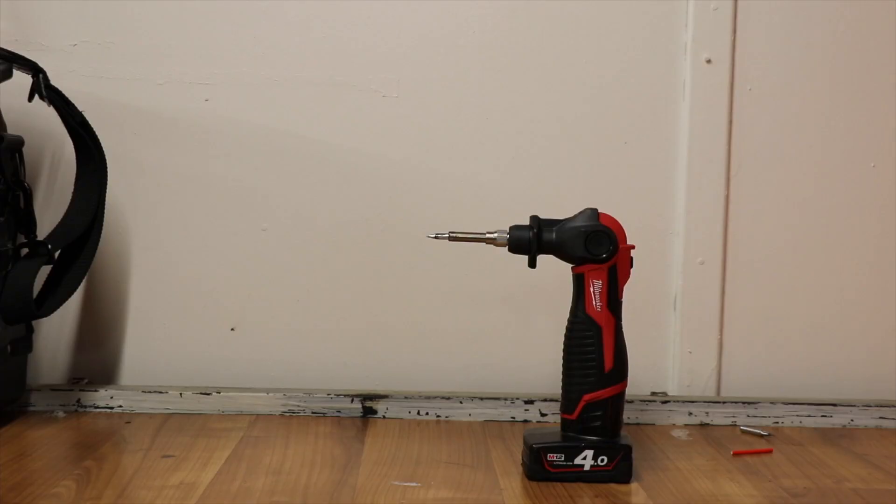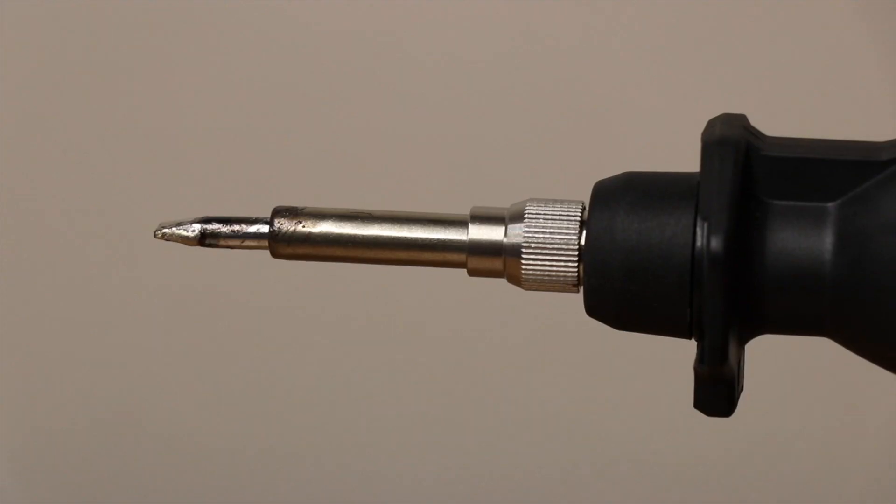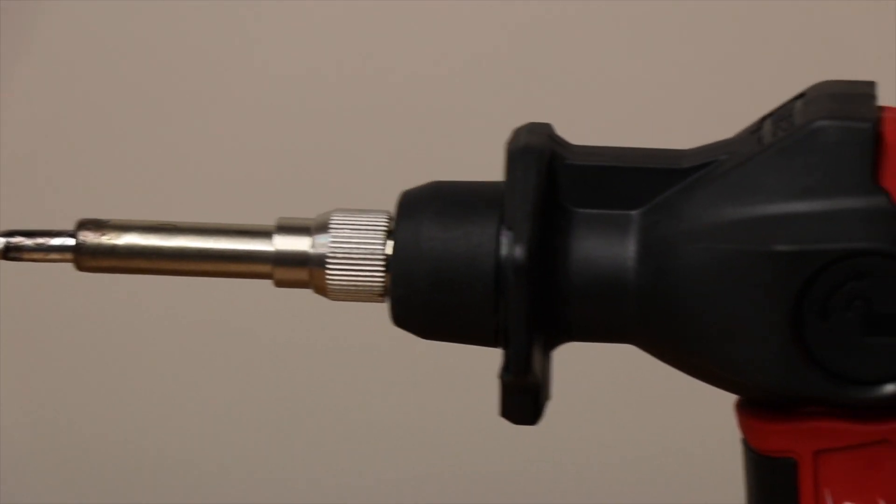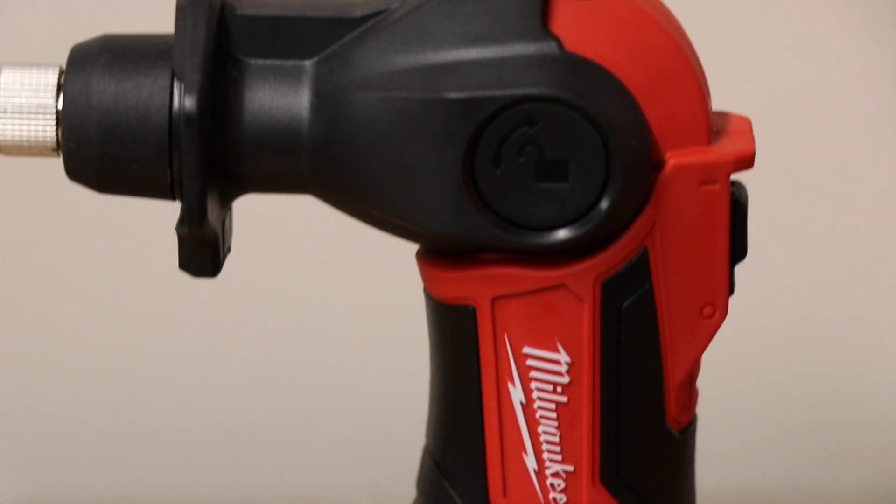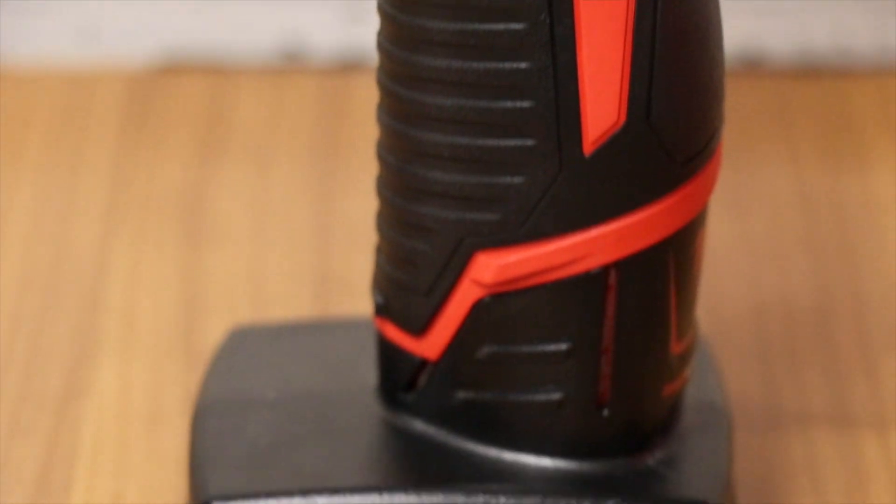The head of the iron is adjustable and lets you lock it into three positions. If you partner it with one of the M12 extended capacity batteries such as a 4 or 6 amp hour, you can stand it up on a bench to allow you to use two hands for soldering and holding your material.